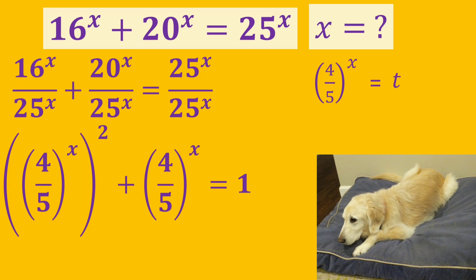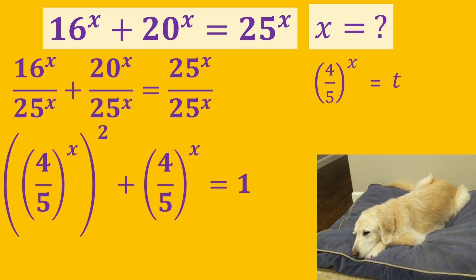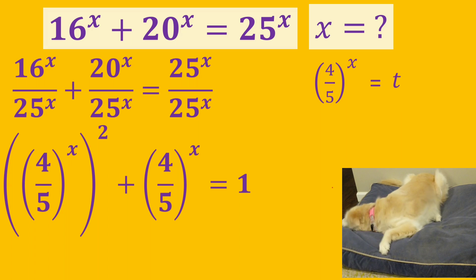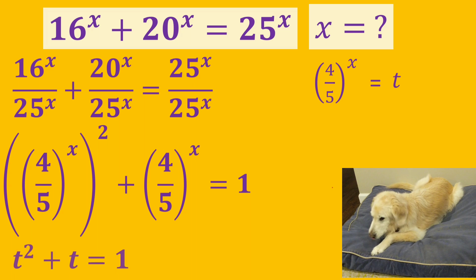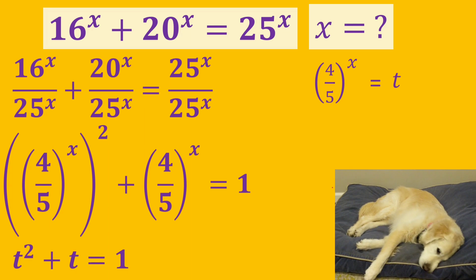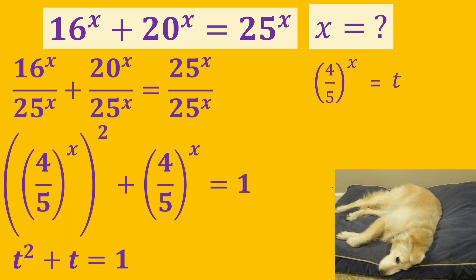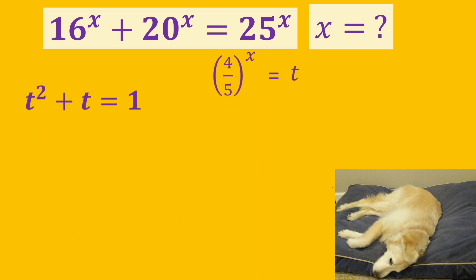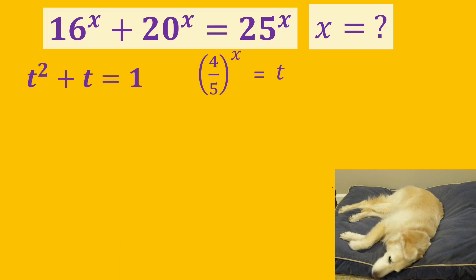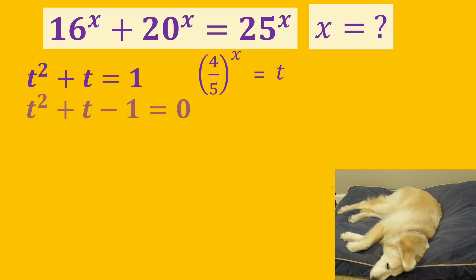Now, it is time to use a variable. Let's equate 4 over 5 to the power of x to t. So, we can rewrite the equation like this: t squared plus t is equal to 1. Now, we have a quadratic equation. All we need to do here is to solve this quadratic equation.